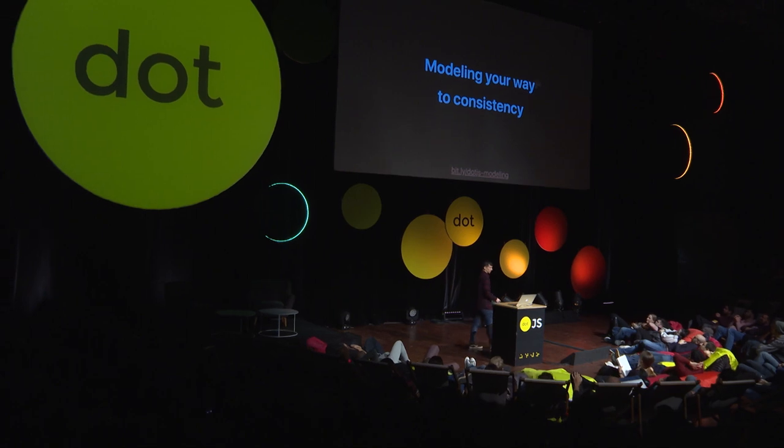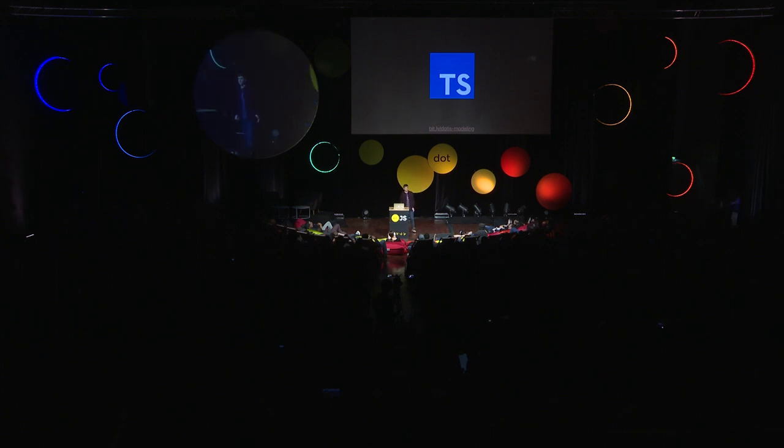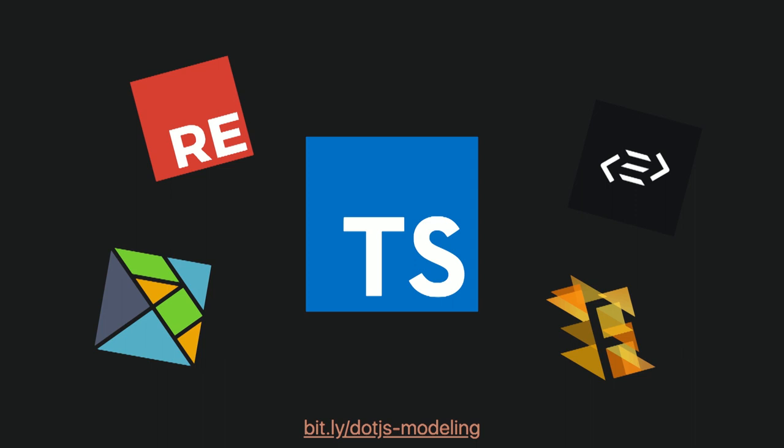I want to talk today about domain modeling and how we can use it to make our applications more consistent. There's going to be a lot of code, so the link to the slides is there — if you miss something, you can check it out later. Examples are going to be in TypeScript because they benefit from the type system mainly, so they apply to any other compiled languages. Let's start.